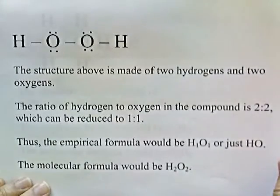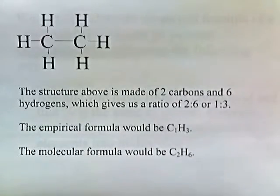Here's another example. The structure above is made of two carbons and six hydrogens, which gives us a ratio of two to six or one to three. The empirical formula would be C1H3 and the molecular formula would be C2H6.